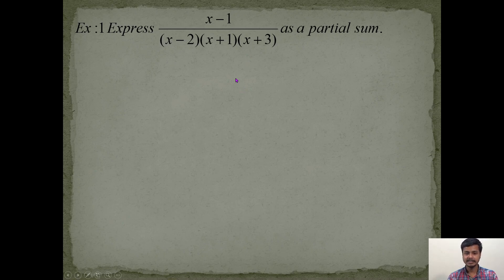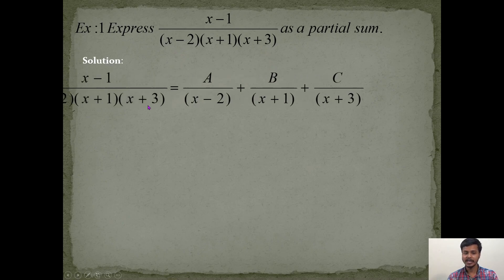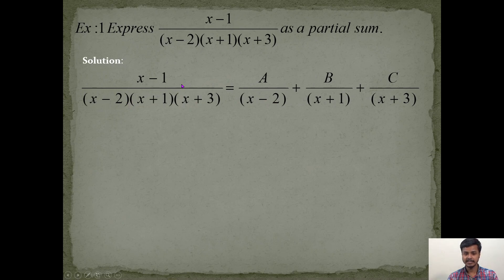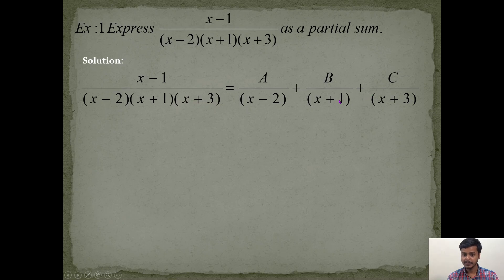Now let's express this as a partial sum. There are three factors, so there will be three terms: A/(x − 2) + B/(x + 1) + C/(x + 3). The method I am going to apply — I will apply it first and then tell you its name. Our objective is to find the values of A, B, and C.